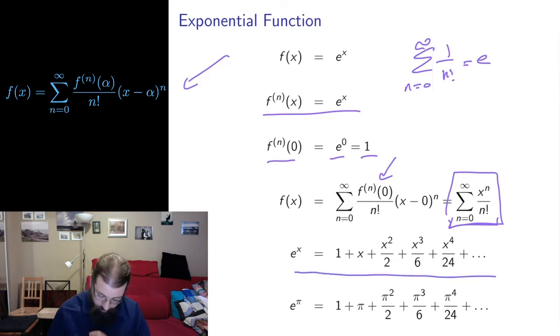If you want to see a bit more what this looks like you can write it out in expanded form. We've got those factorials in the denominator 2, 6, 24 and these powers in the numerator.